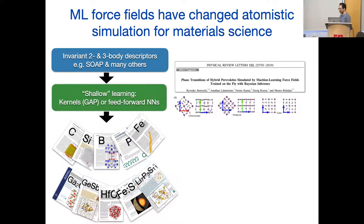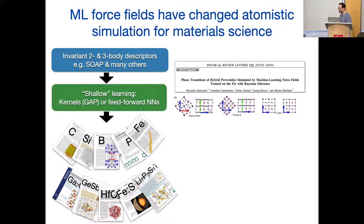Other groups use these techniques too. Here is an example of a force field built with our techniques for hybrid perovskites — those are solar cell materials that undergo various interesting phase changes. In order to simulate those phase changes we need larger unit cells and longer time scales, which are outside the reach of explicit electronic methods. So you fit a potential and study them.